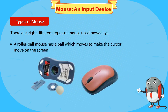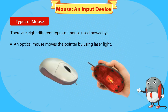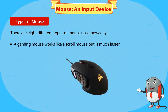A roller ball mouse has a ball which moves to make the cursor move on the screen. An optical mouse moves the pointer by using laser light.